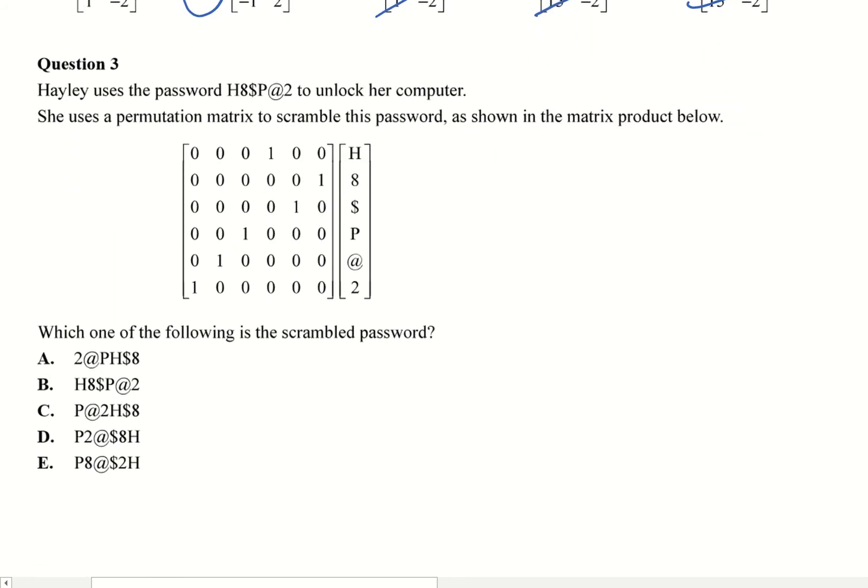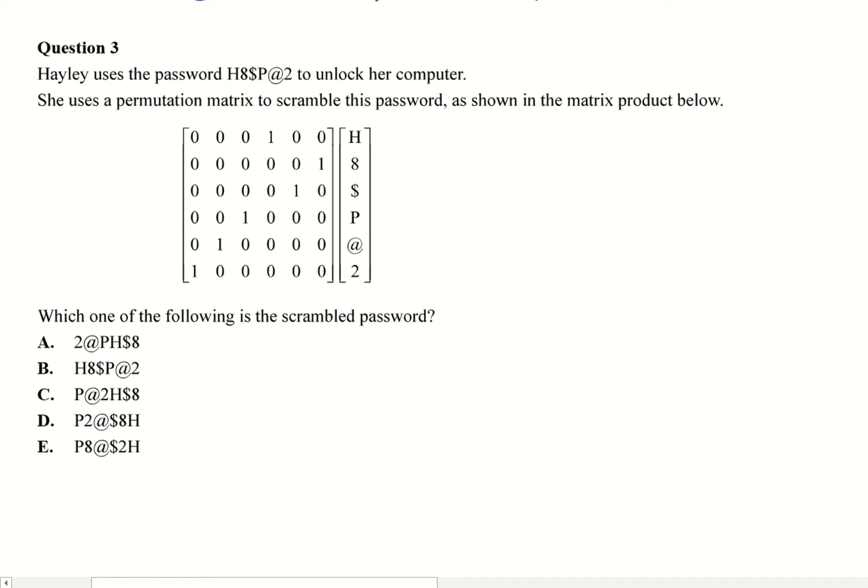All right, so Hayley uses a password given there to unlock her computer. She uses a permutation matrix to scramble this password, as shown in the matrix product below. This is my permutation matrix, and this is my matrix, we'll call it Q. In this format PQ, that means it's going to be a row permutation.